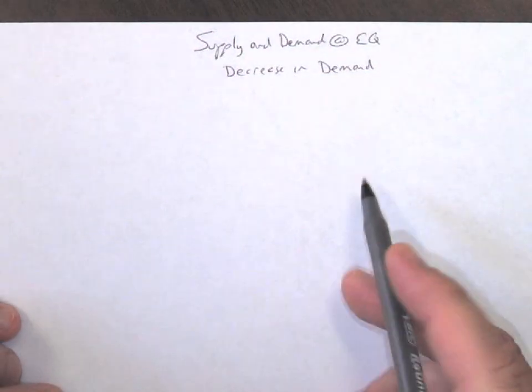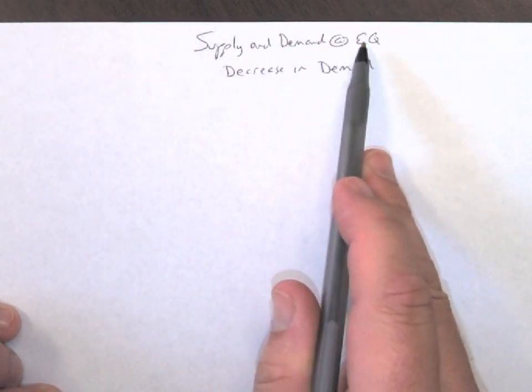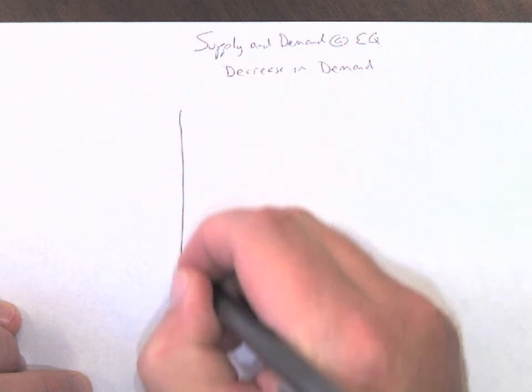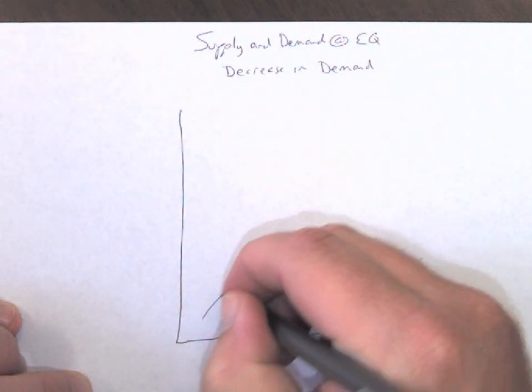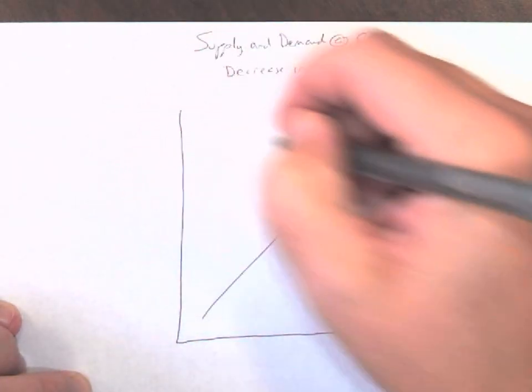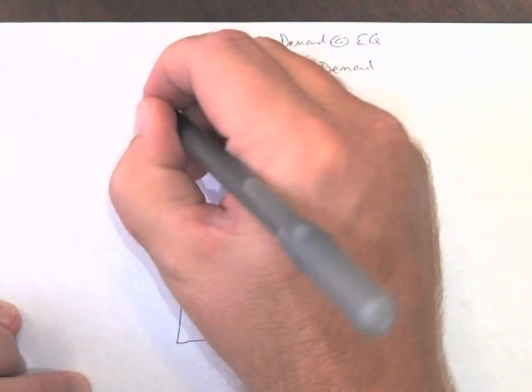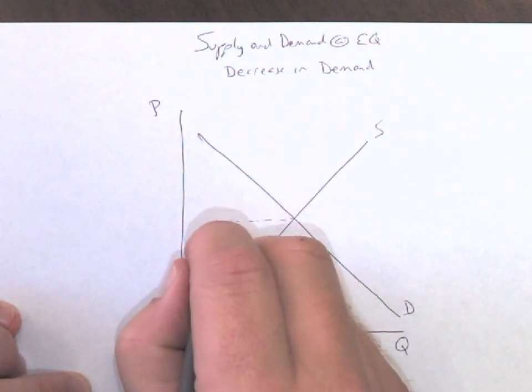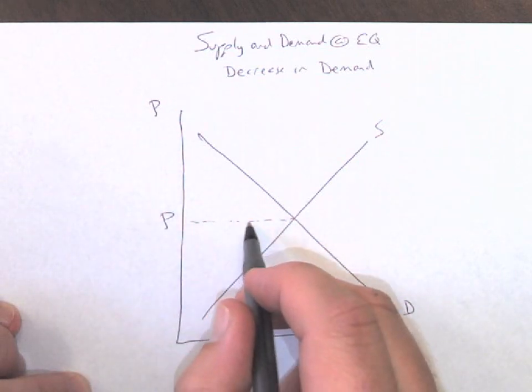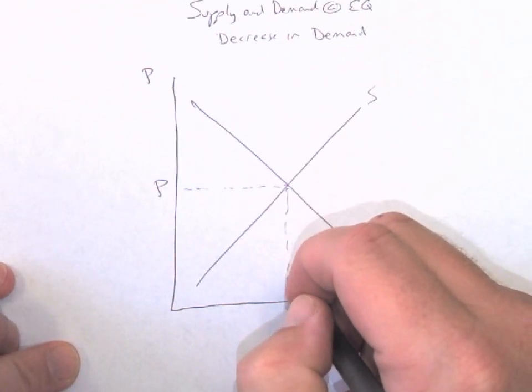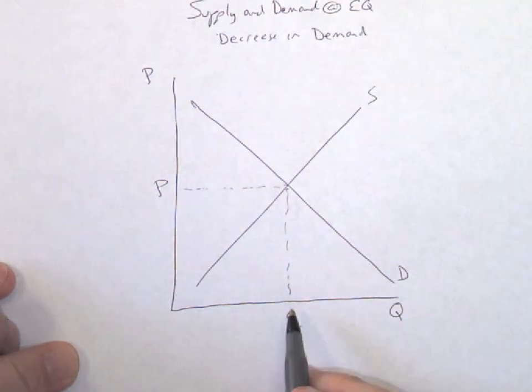Now we're going to look at a decrease in demand. We have supply and demand at equilibrium. So we start off our graph with our supply, our demand, our quantity, our price, our equilibrium price, and our equilibrium quantity.